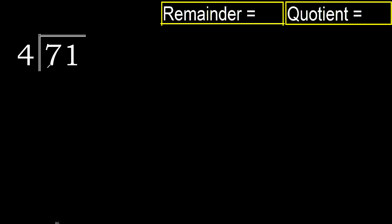71 divided by 4. 7 is not less, therefore with 7 and 4: 4 multiply by which number is nearest to 7 but not greater? 4 multiply by 2 is 8 — 8 is greater. Multiply by 1: 4 multiply by 1 is 4, is not greater. 7 minus 4 is 3.